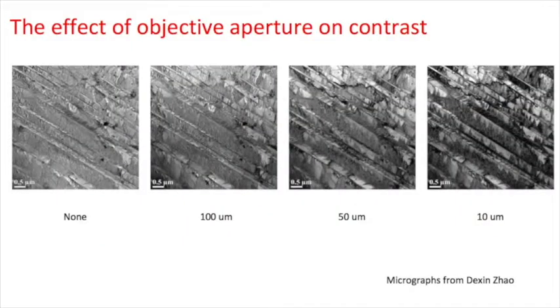All the images in this slide were taken from the same area of the specimen, with and without objective apertures. When no objective aperture was inserted, we get the best signal but the worst contrast. When we used the smallest objective aperture — in this case 10 microns — we get the best contrast but sacrifice some signal. To improve the signal-to-noise ratio when using a small objective aperture, you can either converge the beam or increase the image acquisition time. In this video, we showed you how to take good bright field TEM images. In the next video, we'll show you how to acquire the diffraction patterns on the camera.